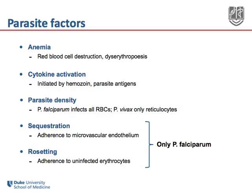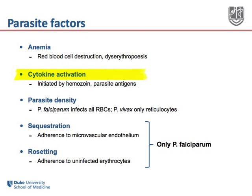Now we'll review some of the specific mechanisms from both the parasite and the host that result in pathogenesis. Anemia results both from red blood cell destruction owing to the parasite's blood stage, along with dyserythropoiesis from a general bone marrow dysfunction. This is due in part to a generalized cytokine activation, which is potently initiated by hemozoin released by ruptured red blood cells as well as expressed insoluble parasite antigens. Parasite density, or simply the biomass of infecting parasites, can also contribute to and is associated with severity.